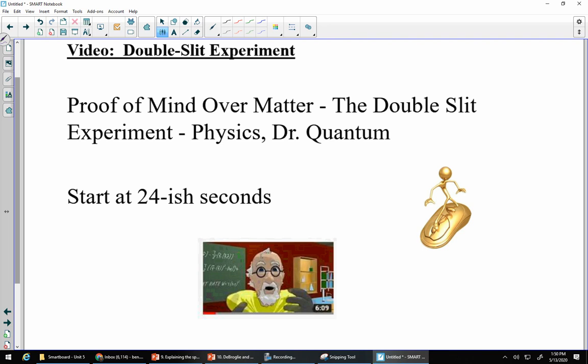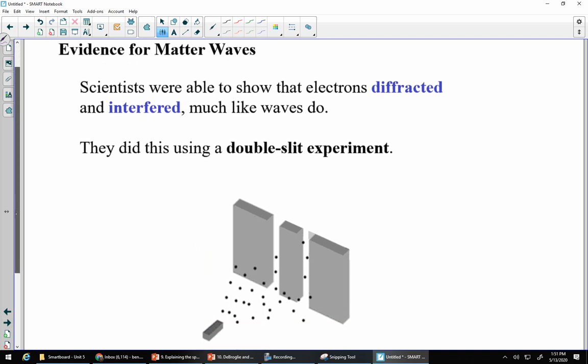Thinking that particles can behave like a wave is one thing, but actually doing an experiment to figure out that they are behaving as waves is another. If you search in YouTube, proof of mind over matter, one of the first videos that comes up is the double slit experiment. It is the one that is 6 minutes and 9 seconds. I would like you to check out this video. It's actually just a clip out of a larger video called Down the Rabbit Hole. It's super cheesy, a cartoon about this, but it really does a good job showing the double slit experiment. What we're looking at starts at about 24-ish seconds into the video. Go ahead, put it on a pause, check that out right now.